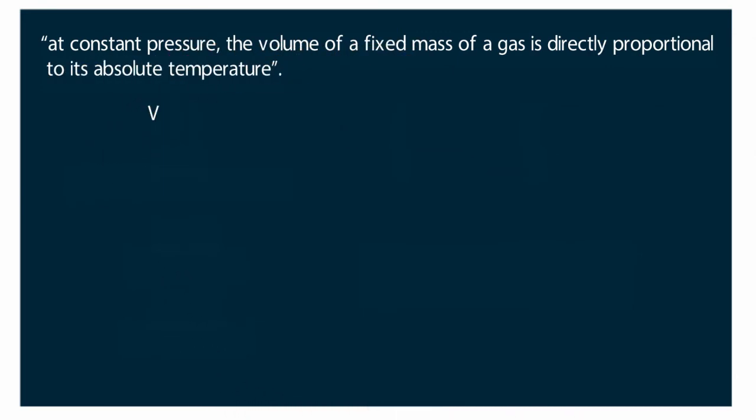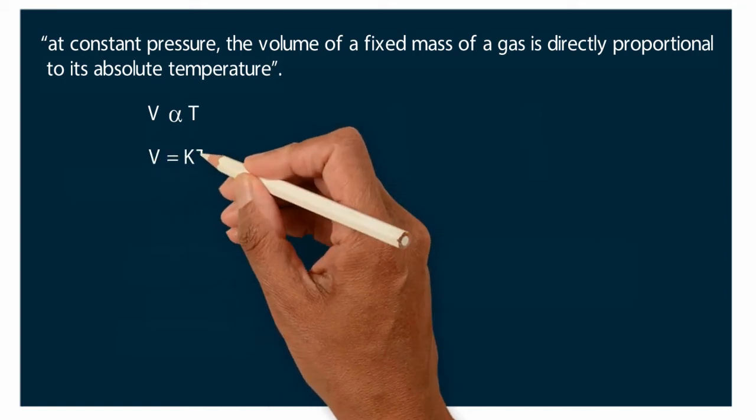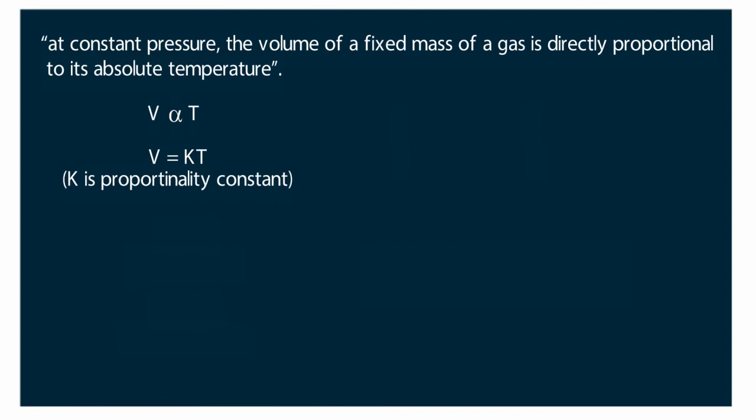Let V be the volume of gas and T be the temperature. Then mathematically, this statement can be expressed as V is proportional to T. This proportionality can be expressed with constant parameter K. V is equal to K into T where K is the proportionality constant.